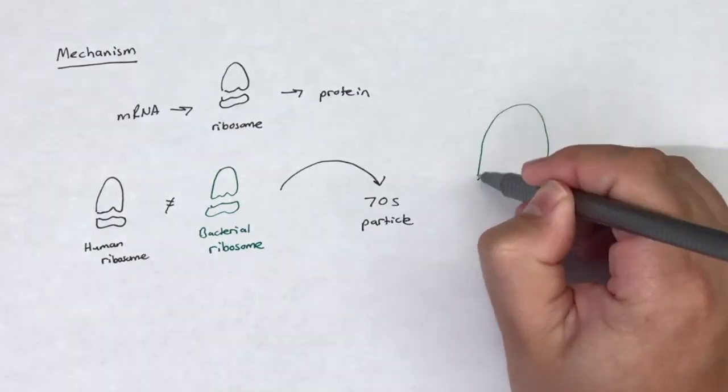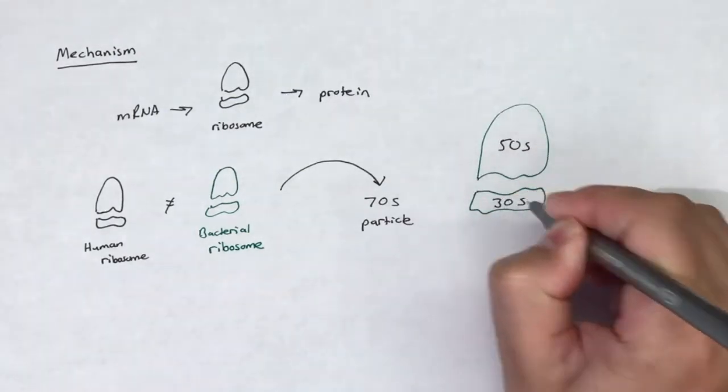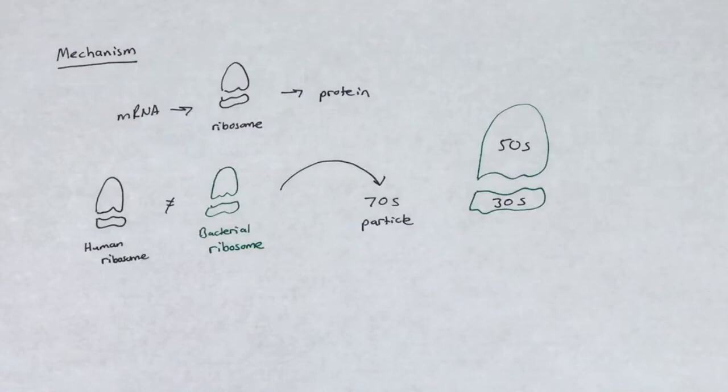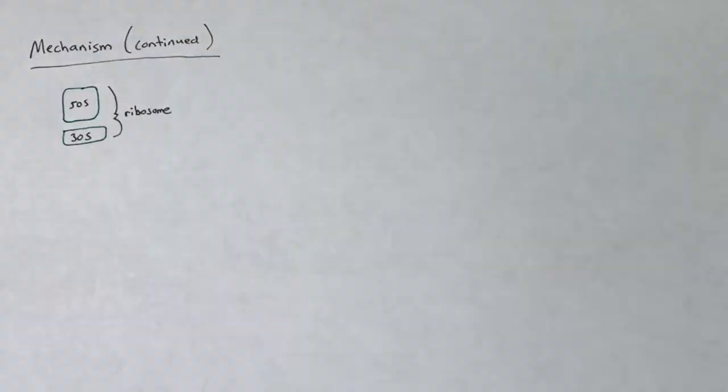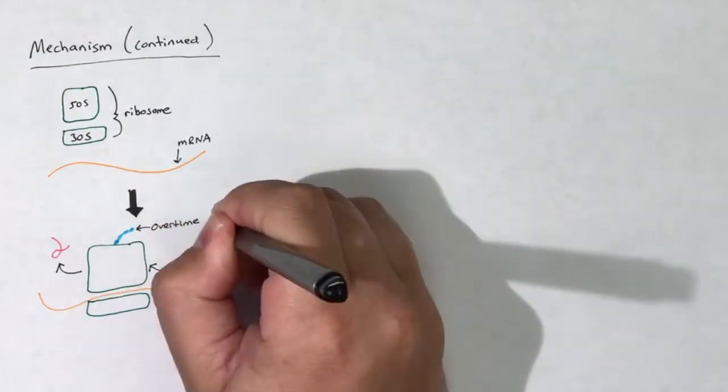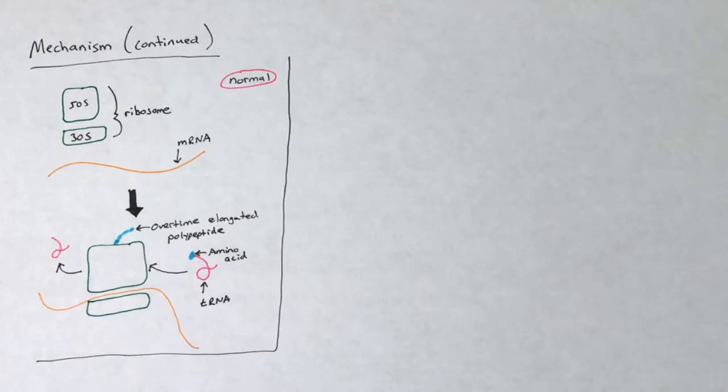Bacterial ribosomes are made up of a 70S particle consisting of a 50S large and 30S small subunit. Specifically, Streptogrammins inhibit protein synthesis by binding the 50S ribosomal subunit.